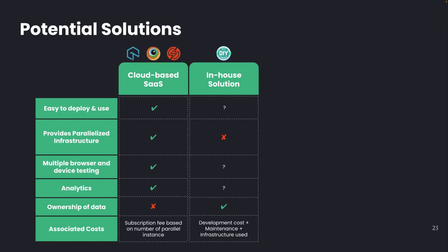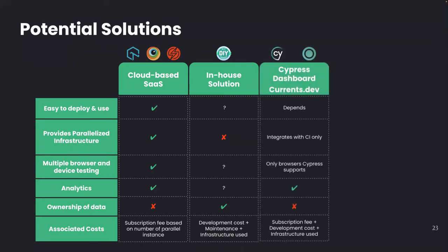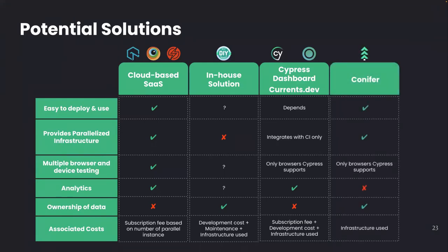Having built the infrastructure, they would also need to spend time and resources maintaining it. Additionally, Drone On could integrate their DIY solution with the Cypress Dashboard or Currents.dev — an alternative dashboard for Cypress. Both are full-featured dashboards that support parallel testing designed to integrate with CI providers. The CI is typically only configured to run tests at specific times, such as on commit or before a merge — considered a more reactive approach rather than having developers execute tests whenever needed.